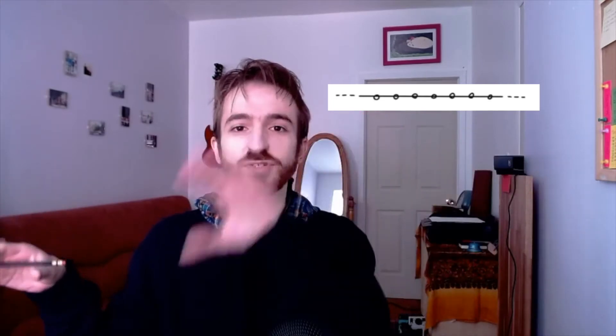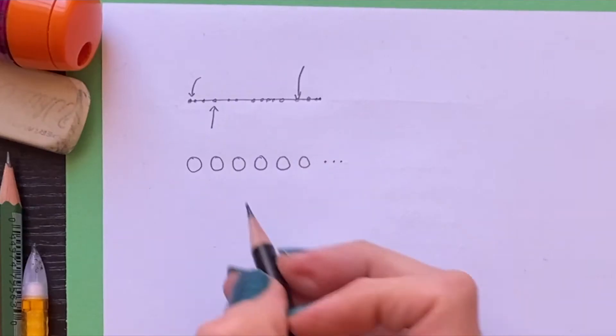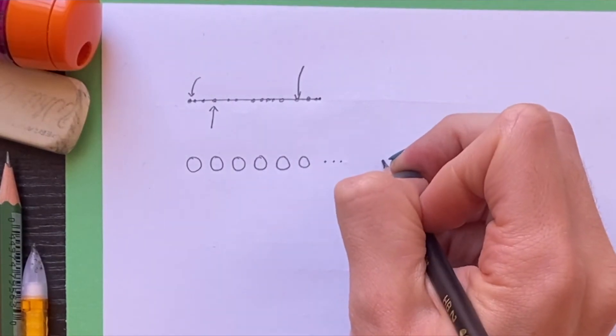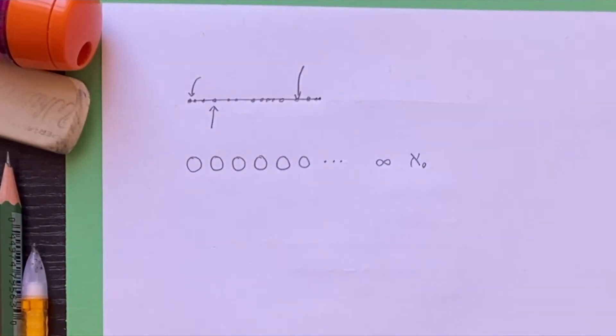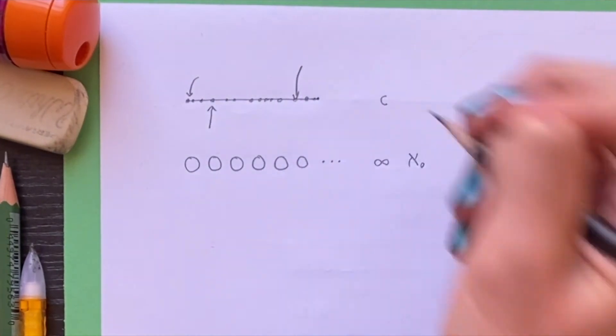When you think about the difference between the continuum and infinity, regular infinity — the kind we talked about last week, what some people call countable infinity — is like something that goes on forever, but it's all separate objects. Whereas continuous infinity, this kind, is like a smooth, continuous, connected infinity. All of the objects blend into each other smoothly. This kind of infinity we call regular infinity, or mathematicians write it with this fancy aleph-naught. And this we call the continuum, or C.